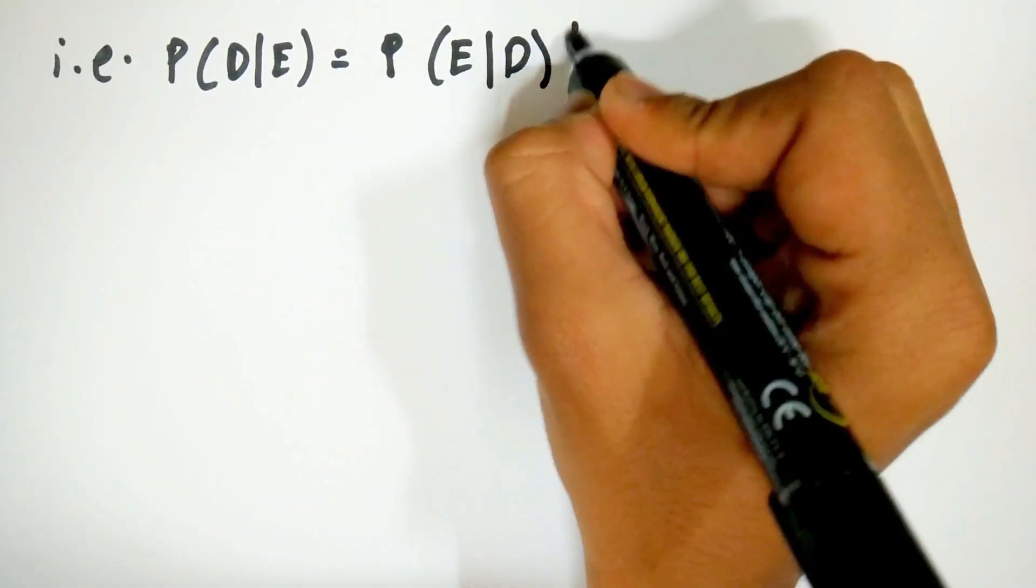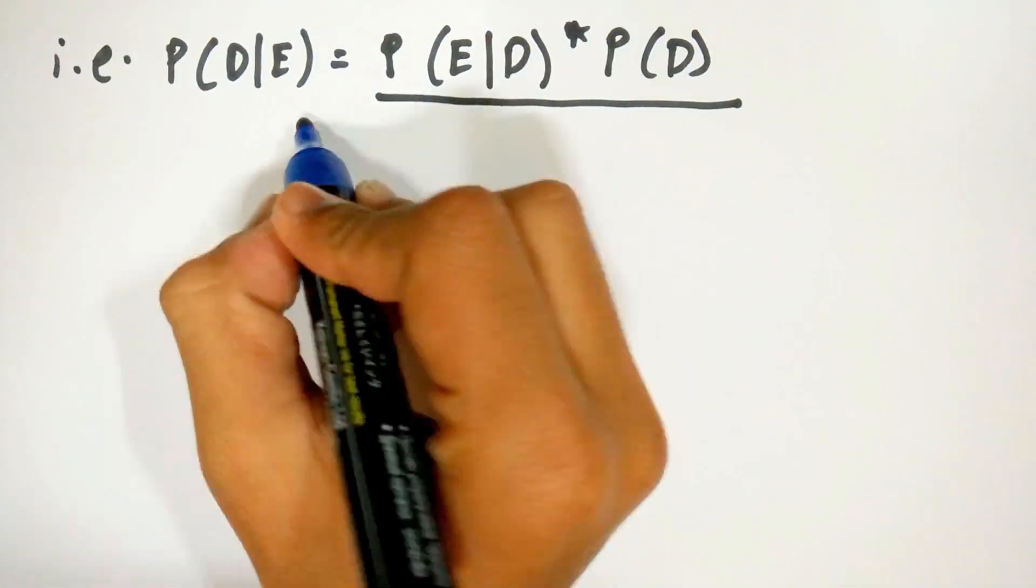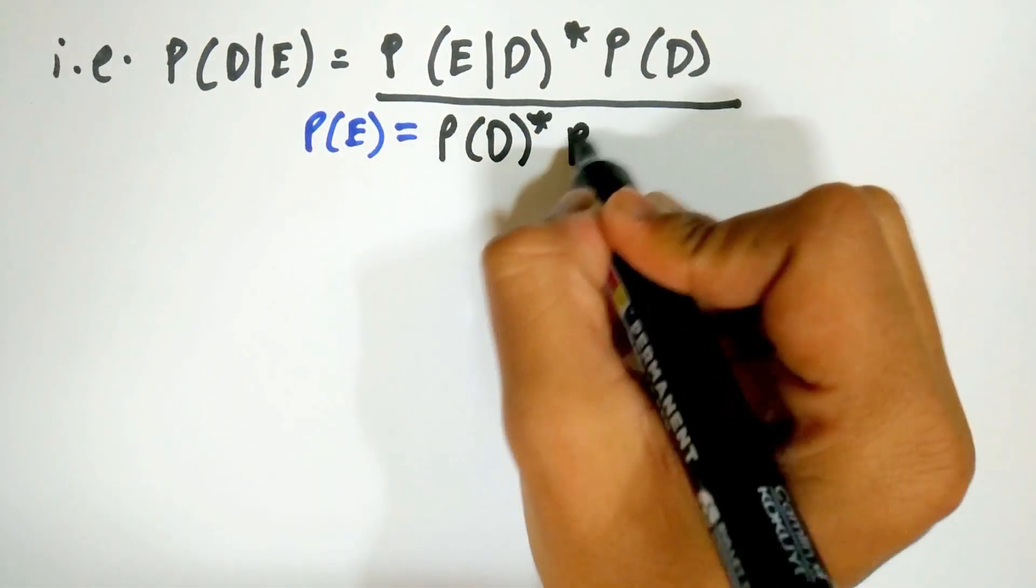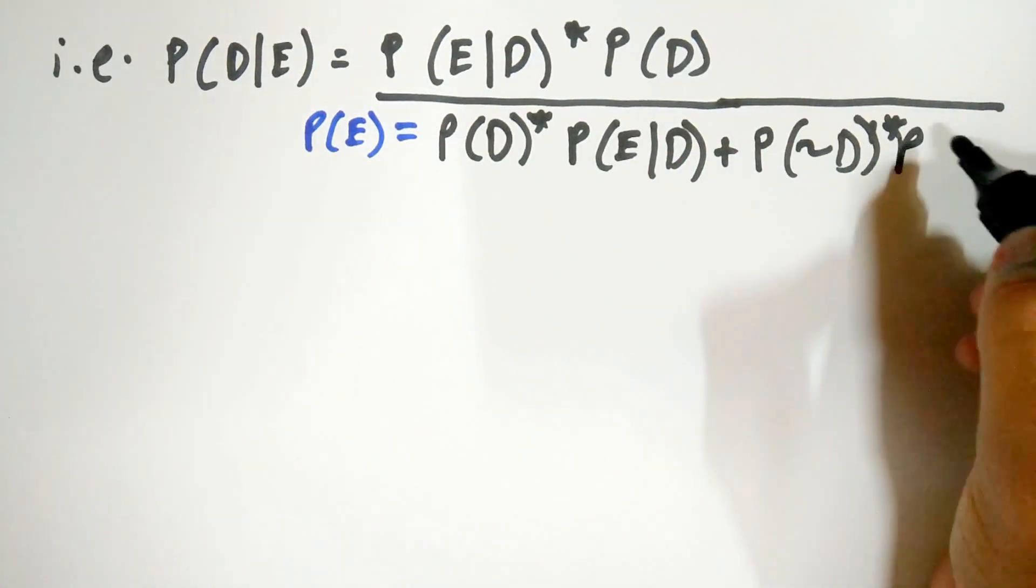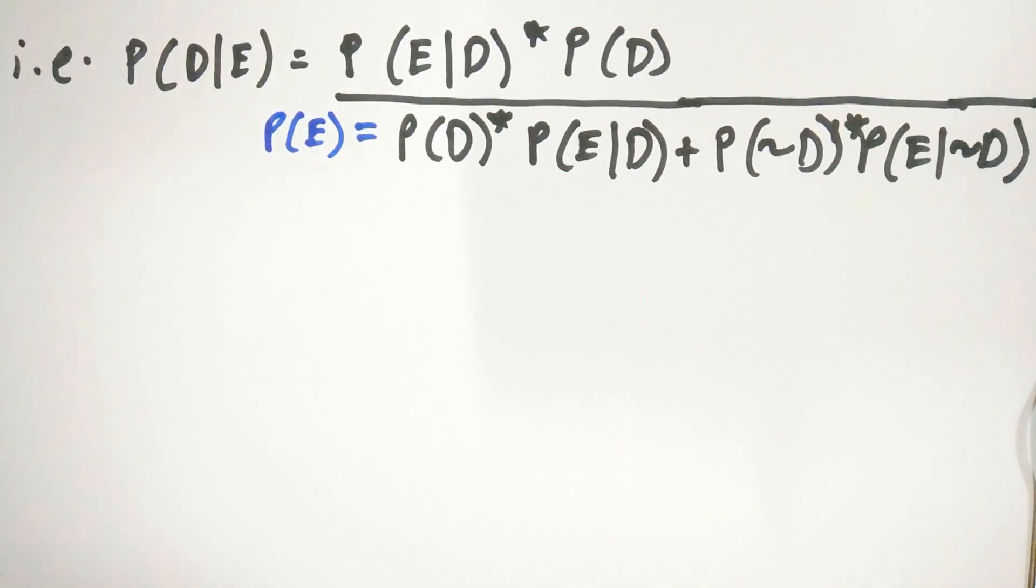The probability of testing positive is essentially a combination of the probability of you having the disease and testing positive plus the probability of you not having the disease but being falsely identified.